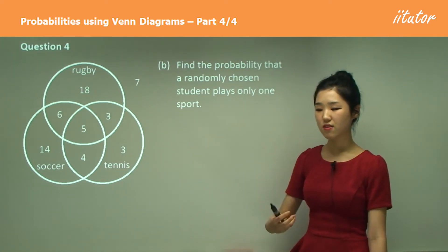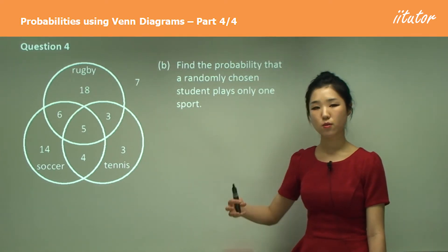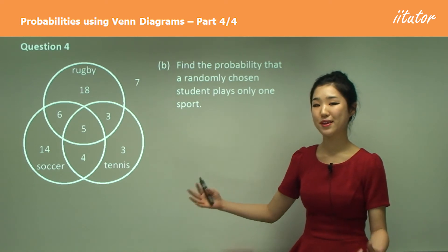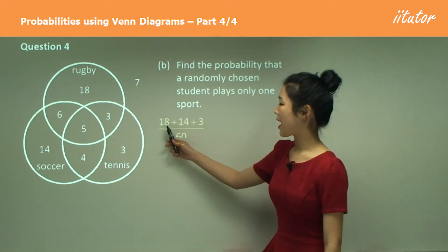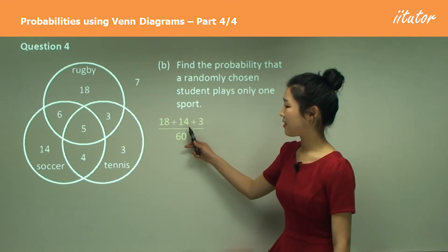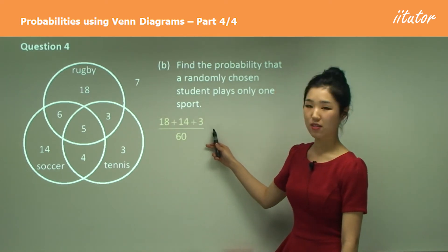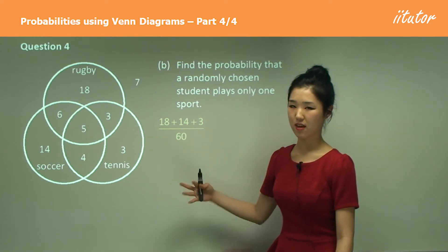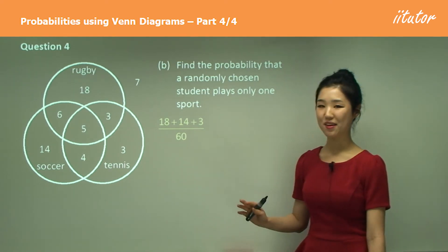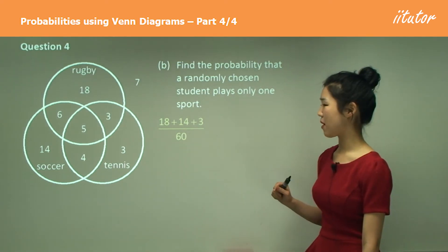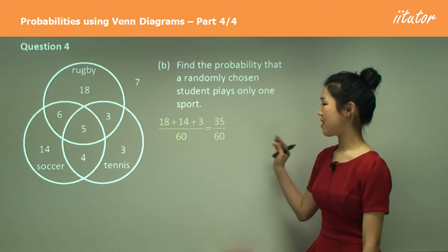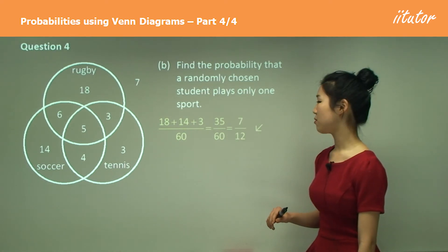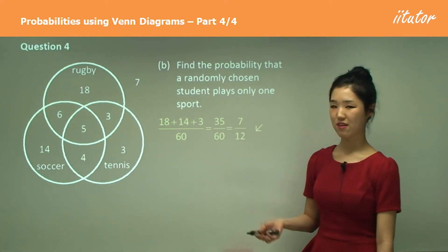Since it's this or this or this, in probability we simply add. So I'm going to add 18, 14, and three, all over 60 because they have the same denominator. That gives us 35 over 60, which simplifies to seven over 12.